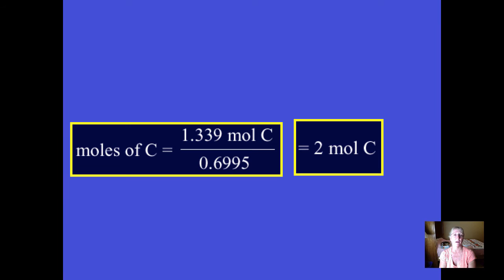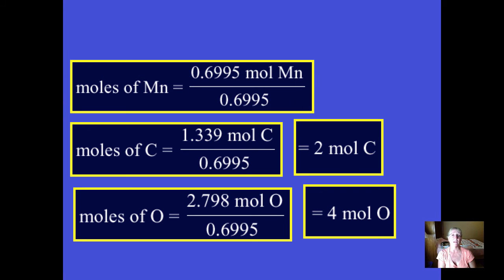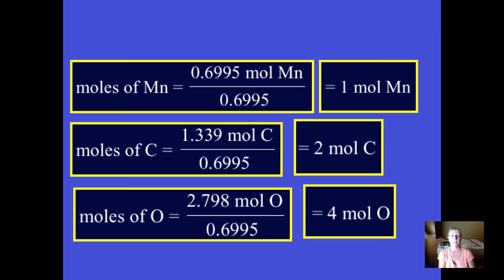When I divide 1.339 moles of carbon by 0.6995, the number 2 rolls out. When I repeat the process for the moles of oxygen, out pops the number 4, and any number divided by itself is 1. I should point out — there probably wasn't a clean '2' in the calculator. If I go 1.339 ÷ 0.6995, I get 1.91, and that's close enough to call it 2. If I go 2.798 ÷ 0.6995, I get something that's pretty much right on: 4.